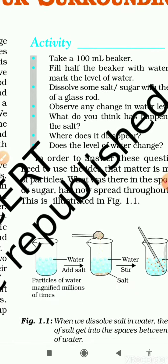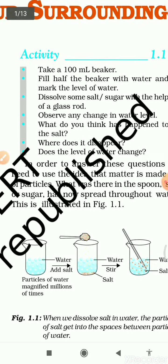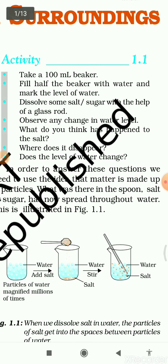In science, each activity is important because through it we understand concepts. When writing in the practical copy, begin with the aim, then materials required, then procedure, and finally the conclusion. The activity: take a 100 ml beaker, fill half the beaker with water and mark the level of water. Dissolve some salt or sugar with the help of a glass rod. Observe any change in water level. What happened to the salt? Where does it disappear? Does the level of water change?